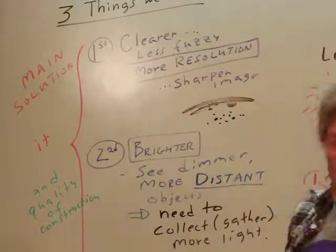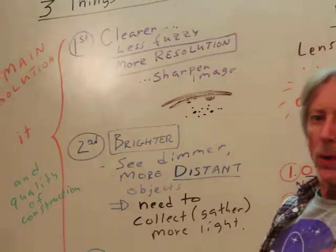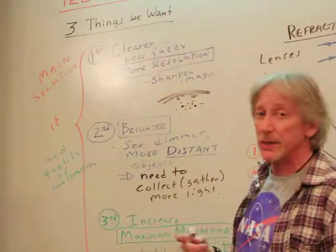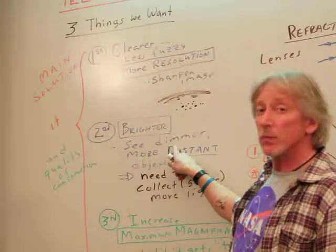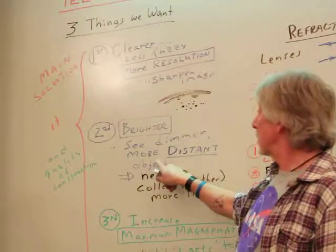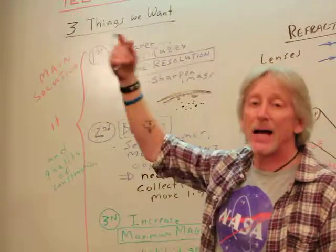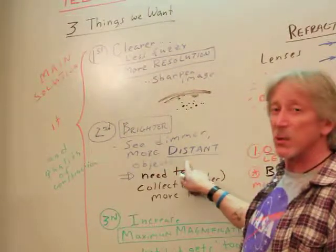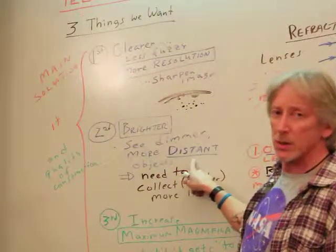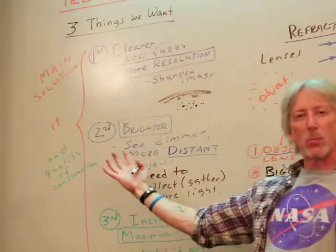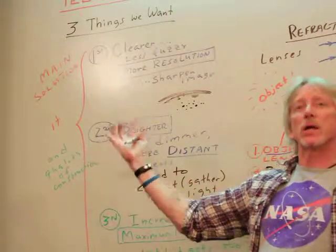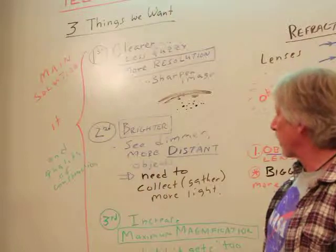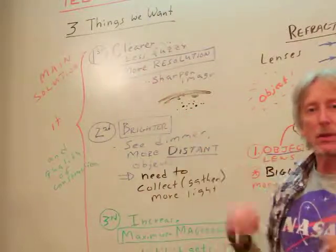Second thing we want here is brighter. Why do we want them brighter? Well, if you can see dimmer things, right? You can't see Neptune with your eye, but with a telescope, you can see it. And then if you can see something even dimmer, maybe a galaxy, it's so far away, it's so incredibly dim, but we'd like it brighter. And the dimmer you can see, the more distant you can see. So how do we do that? We need to collect and gather more light from that object and put it together. So if you overlap light and light and light and light, it becomes brighter. So that's another goal we'd like to see farther away.